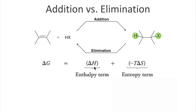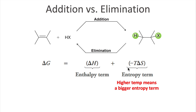Whether the addition or elimination is favored really depends on temperature, because temperature can magnify the entropy term. If temperature is very small, the entropy term is insignificant, so enthalpy determines the direction — and since ΔH is negative, the forward addition reaction is favored. If temperature is very high, it magnifies the positive entropy term so much that it dwarfs the enthalpy term, making ΔG positive, meaning the forward reaction is not favored — the reverse reaction, elimination, is favored.